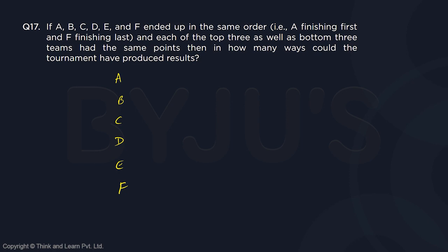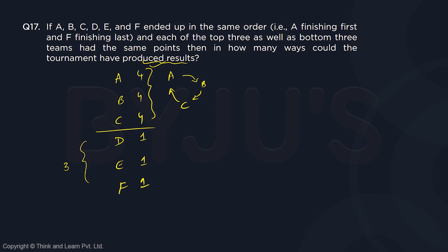In how many ways could the tournament have produced these results? We already saw for 4, 4, 4: A beats B, B beats C, C beats A — one cycle. Or the reverse: A beats C, C beats B, B beats A — the counterclockwise cycle. Two possibilities in the upper group.